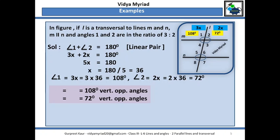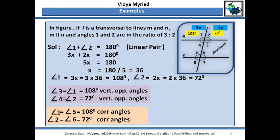Now to find the other angles: angle 3 is equal to angle 1 and angle 4 is equal to angle 2 because of vertically opposite angles. When I know angles 3 and 4, I can use alternate angles — angle 3 will be equal to angle 5 and angle 4 will be equal to angle 6 because of alternate interior angles. Or angle 1 will be equal to angle 5 and angle 2 will be equal to angle 6 because of corresponding angles. You can use any method to solve it.